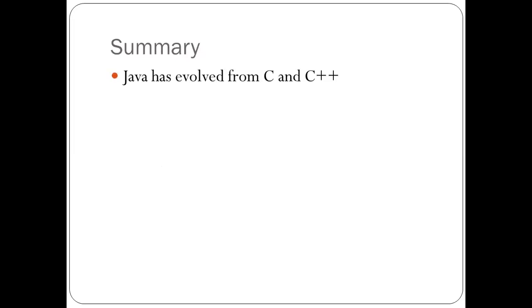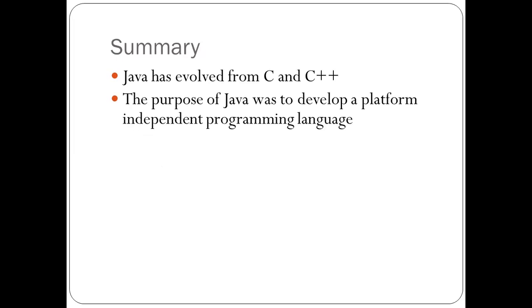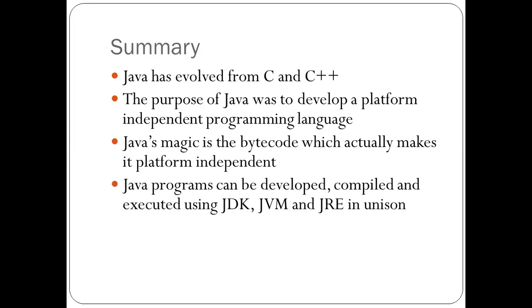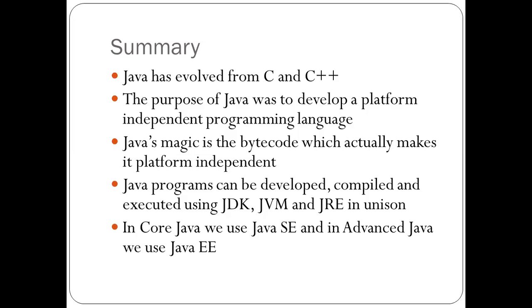Java has evolved from C and C++. The purpose of Java was to develop a platform-independent programming language, and Java's magic is the bytecode which actually makes it platform independent. Java programs can be developed, compiled, and executed using JDK, JVM, and JRE in unison. In core Java we use Java SE — the Standard Edition — and in advanced Java we use Java EE — the Enterprise Edition. This was all about this session, and more informative videos on Java will follow.